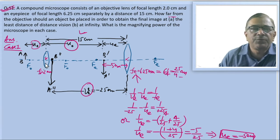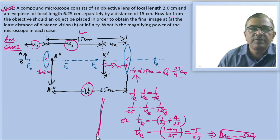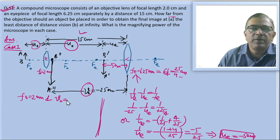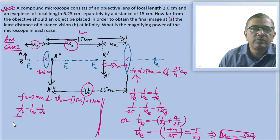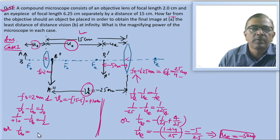For this objective lens, we know f_o equals 2 centimeter and v_o equals 15 minus 5 equals plus 10 centimeter. Using the lens formula: 1 by v_o minus 1 by u_o equals 1 by f_o. Substituting, 1 by 10 minus 1 by u_o equals 1 by 2, so 1 by u_o equals 1 by 10 minus 1 by 2.